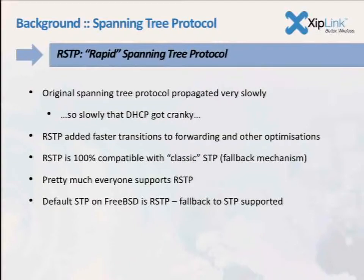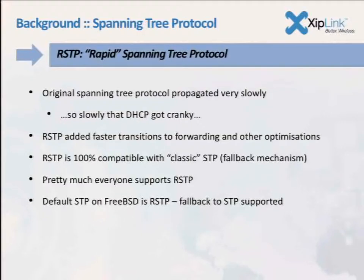The original spanning tree protocol propagated really slowly. You'd send a message to your neighboring bridge saying your path to the root, and it would take about 10 seconds before you'd start forwarding packets. This was very slow — so slow that DHCP was unhappy. That earned spanning tree a reputation for not working nicely with DHCP, and people turned spanning tree off on their networks. Without it, you get bridge loops.